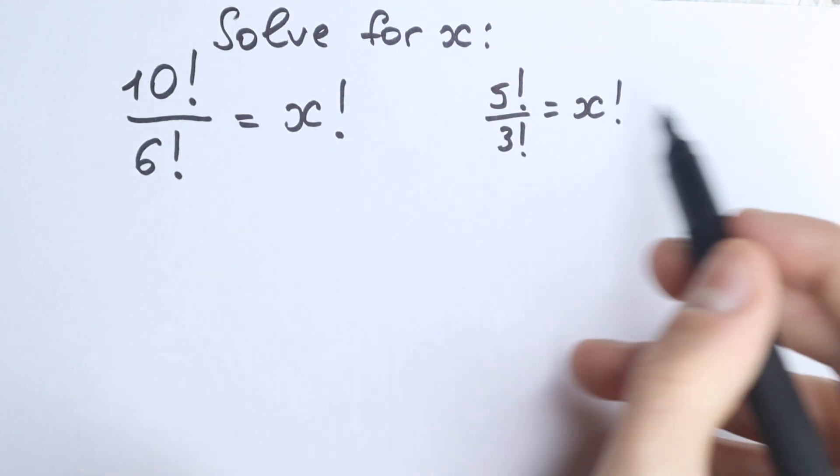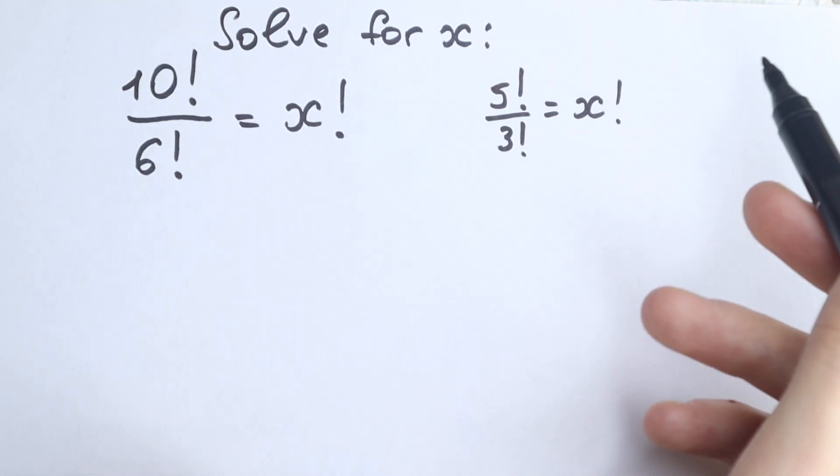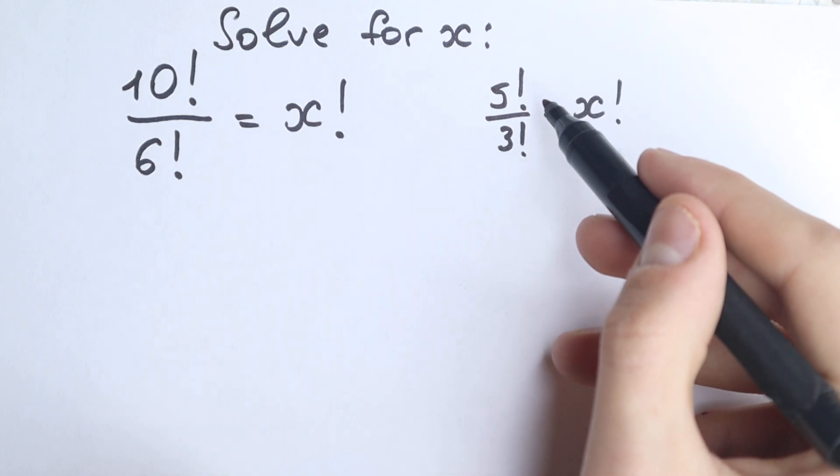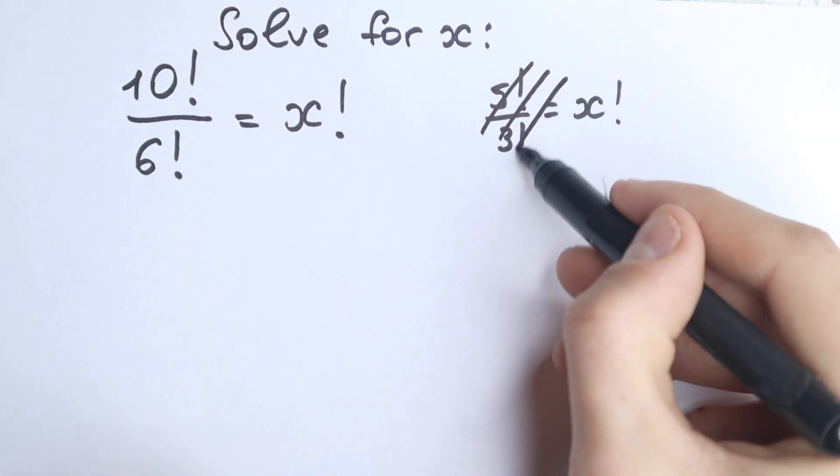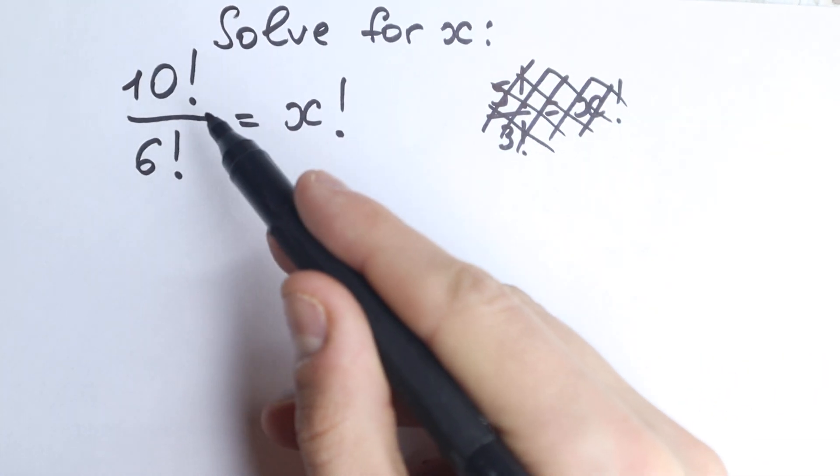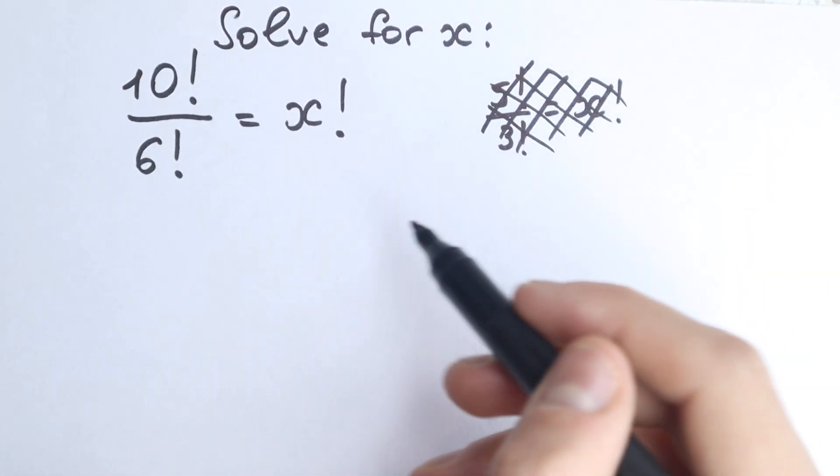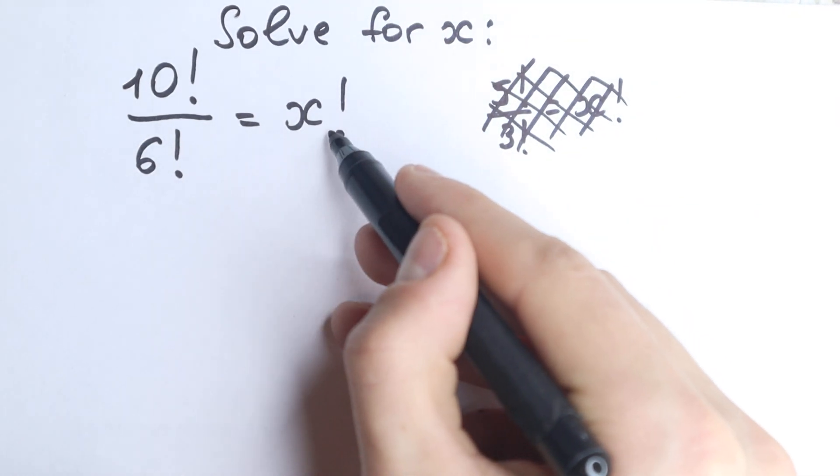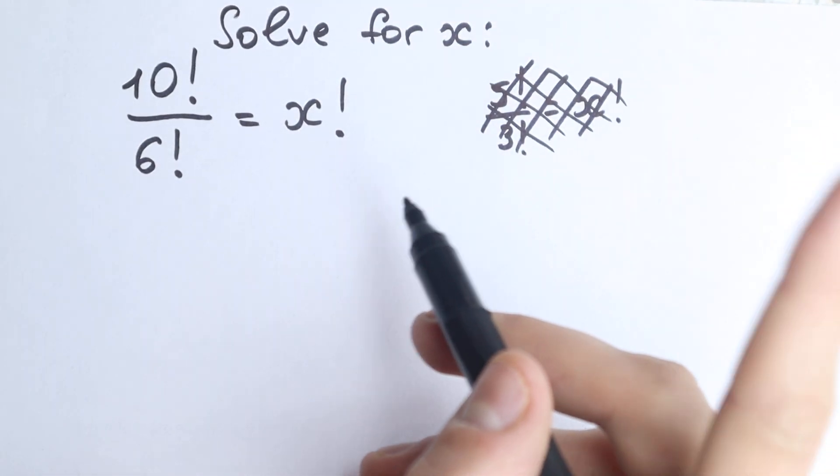Then they express this 5 as a product, this 3 as a product, but as I want to tell you that you don't need to cancel this, this is absolutely incorrect, this is a very big mistake. So let's try to express this 10, express this 6, and let's try to find our answer because this is not our x, this is x factorial, which is really important.